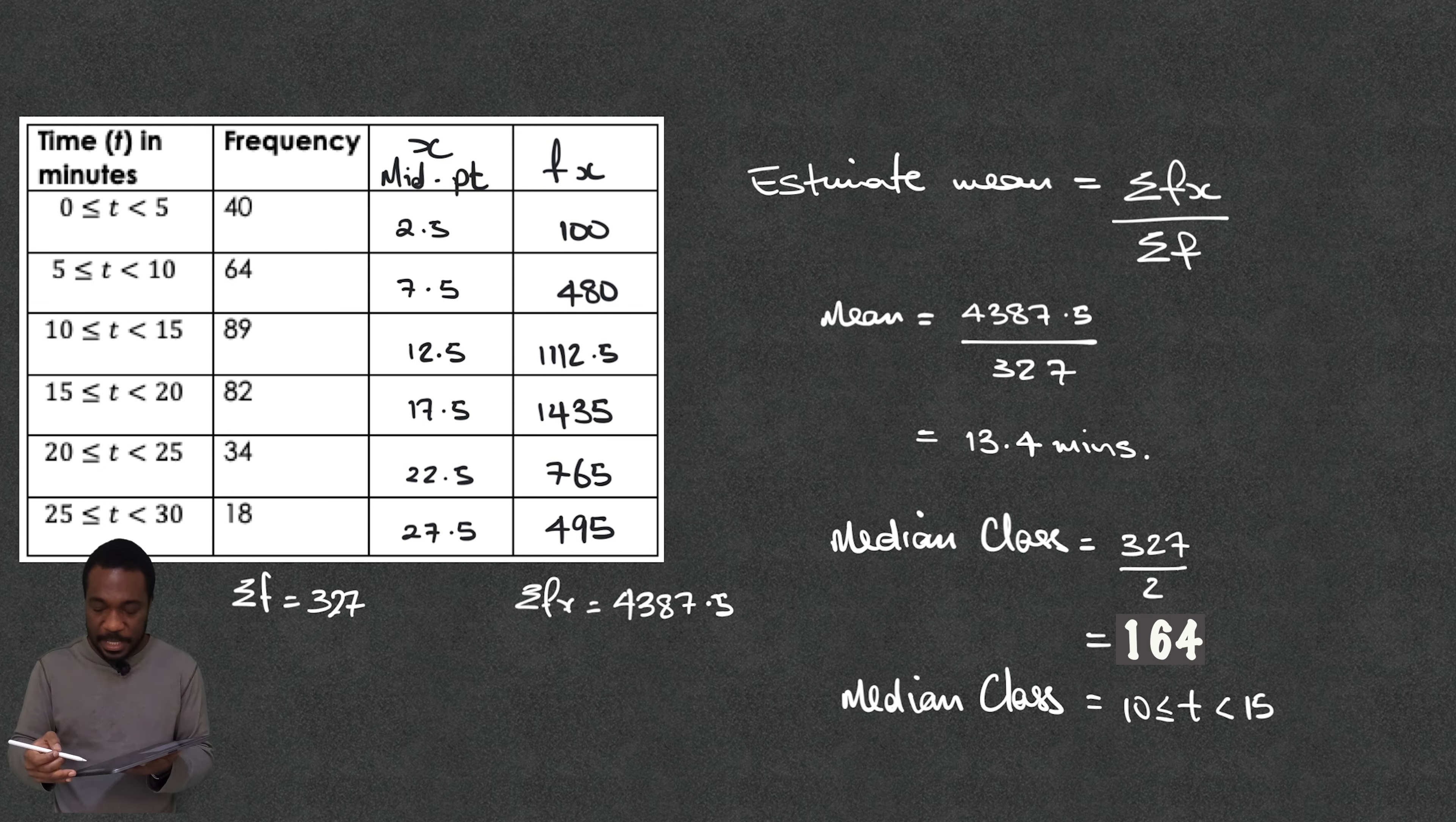So my median class is between 10 and 15 minutes. So that confirms then that my mean is about right. That the average delivery time is about 13.4 minutes because that falls between 10 and 15 minutes.